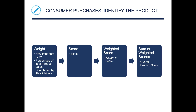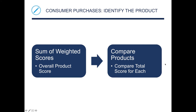In the process of identifying the product, we weigh each attribute — how important is it, expressed as a percentage of the total product value. We have a scale, and in our minds we compute the weighted score, which is weight times the score. The sum of the weighted scores is the overall product score, which leads to comparing products by comparing total scores for each.